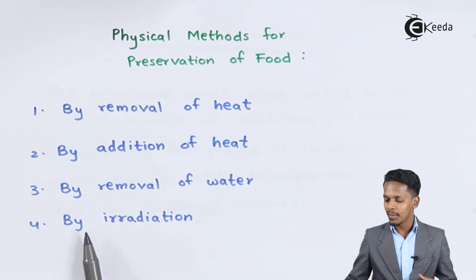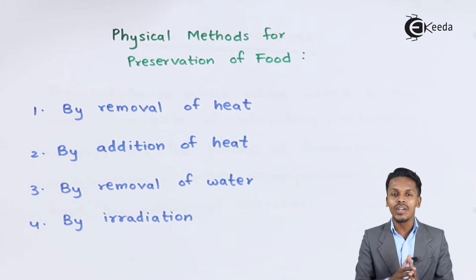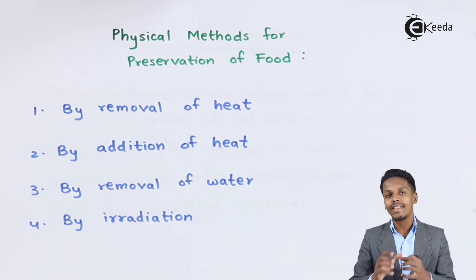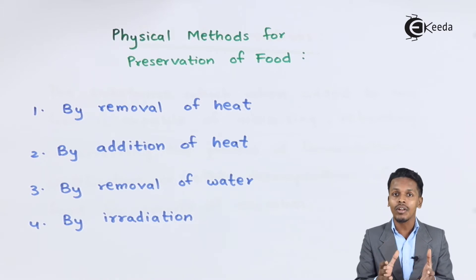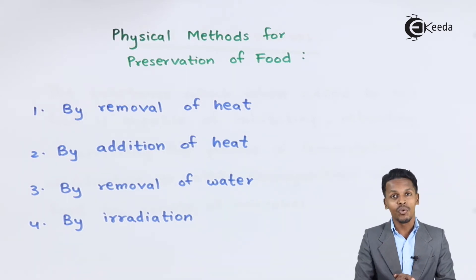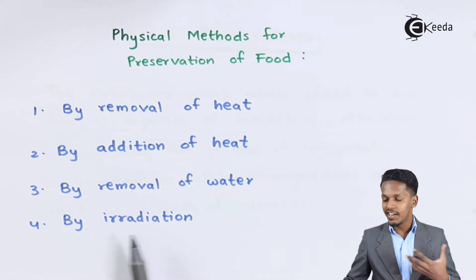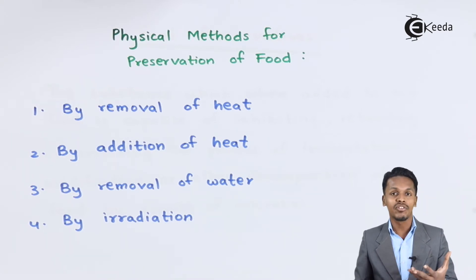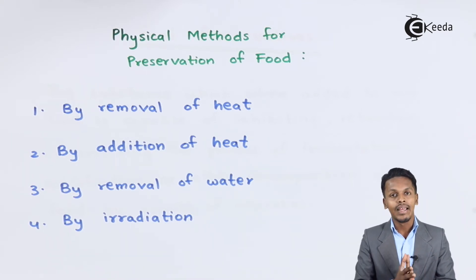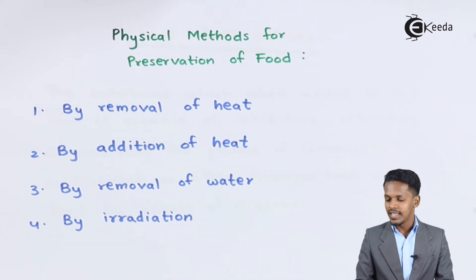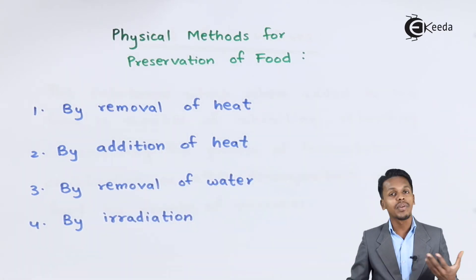The next physical method is by irradiation. This is the most common method that food industries use nowadays. Whenever they are packing food, they make sure there are no microbes or microorganisms that could destroy the food. Bakery industries in particular use this process — irradiation using UV light or other radiation — so that the food is free from microorganisms. These are the physical methods for the preservation of food.